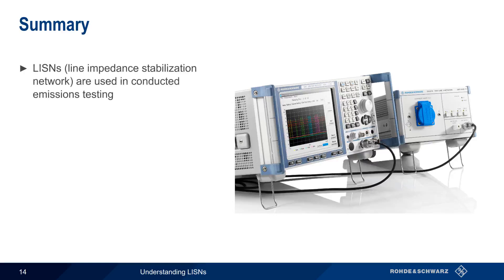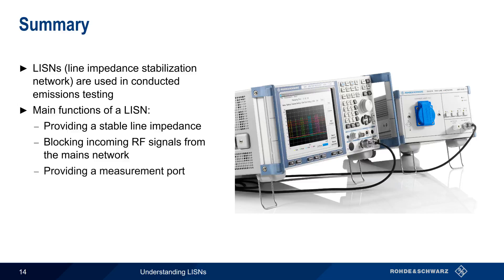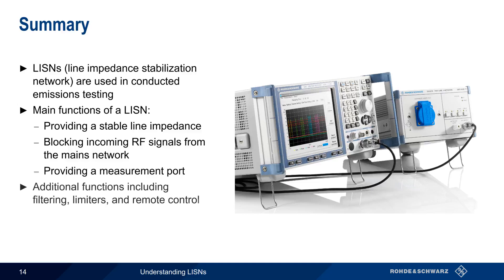In summary, a LISN, or Line Impedance Stabilization Network, is used in conducted EMC emissions testing. A LISN provides three main functions. First, as the name implies, it provides a stable line impedance for the equipment under test, which greatly improves the repeatability of results between different test locations. A LISN also blocks incoming RF signals, to ensure that we're measuring emissions from the EUT and not signals conducted in over the mains network. And finally, a LISN provides a measurement port for attaching test equipment, such as an EMI receiver, spectrum analyzer, or oscilloscope. Some LISNs also provide additional functions such as filtering, limiters, and the ability to control the LISN remotely. This concludes our presentation, Understanding LISNs. Thanks for watching.